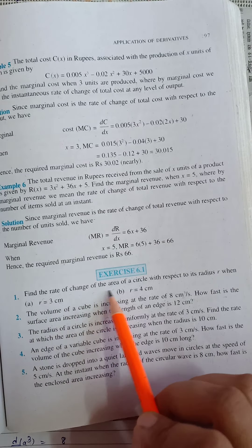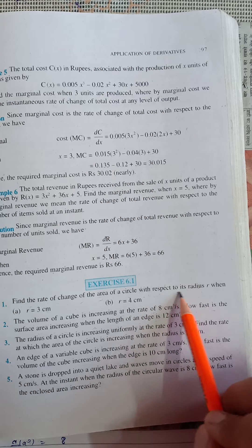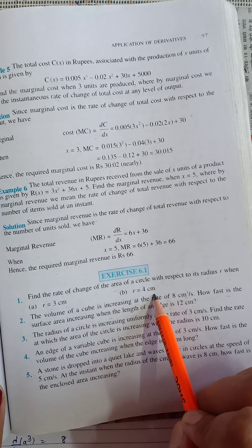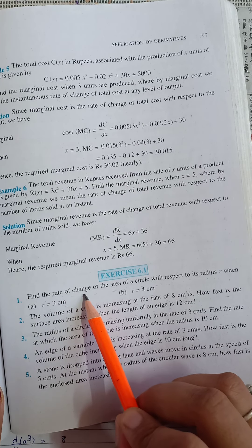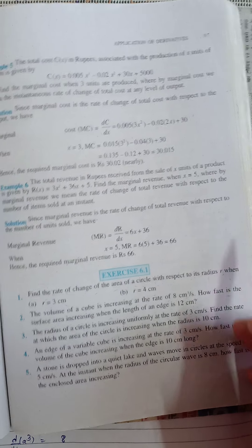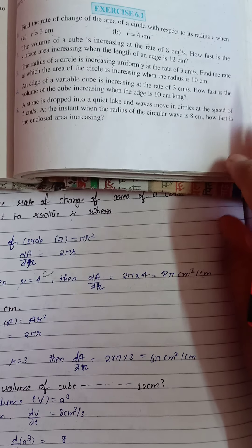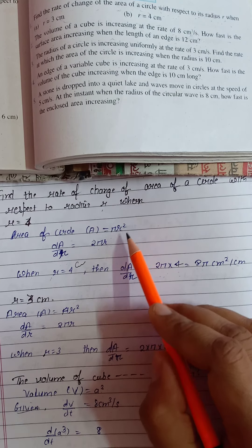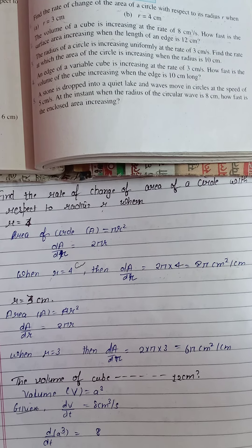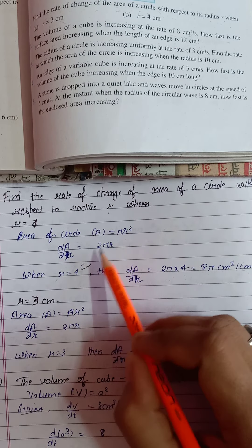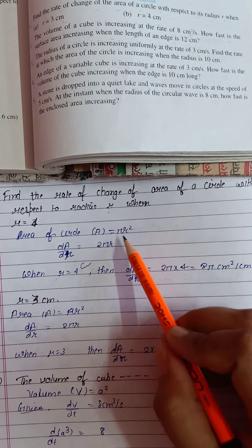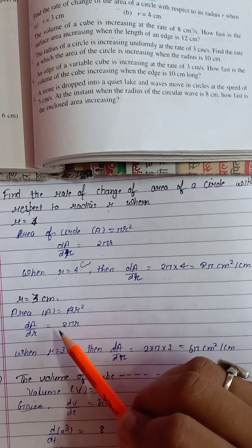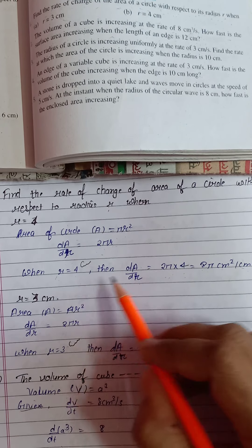Question number 1: Find the rate of change of the area of a circle with respect to its radius r, when r is equal to 3 cm and 4 cm. We have to find the rate of change of area of a circle with respect to radius. The formula for area of a circle is A = πr². Now we have to find its rate of change, that means the derivative with respect to radius r. dA/dr = π × 2r = 2πr. Now we put the value of r.